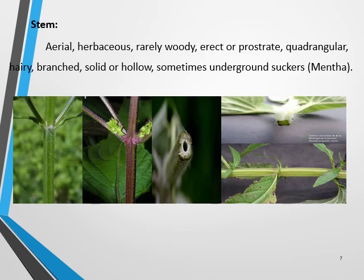The stem of this family exhibits alternate ridges and four rows, and they may be four in number. It possesses hair-like structures, so the stem having hair on its surface is called hairy, and it produces branches. These stems are solid, meaning the stem is not hollow at internodes, while in other cases it may be hollow at internodes. Here we have the pictorial view of a hollow stem.